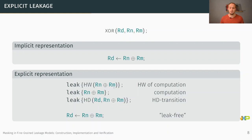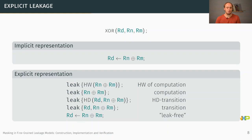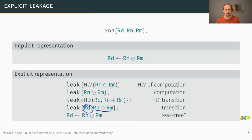The approach also handles transition leakages: we can specify that the Hamming distance between the value stored in Rd prior to assignment and the new value being assigned is leaking. More precisely, rather than fixing exactly the Hamming distance, we specify that some combination of the destination register's prior value and the new value is leaking — which at the cost of one probe allows a side-channel adversary to effectively observe two values.